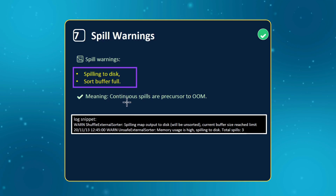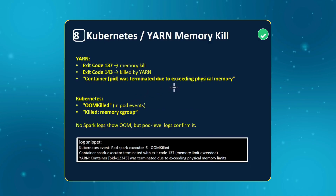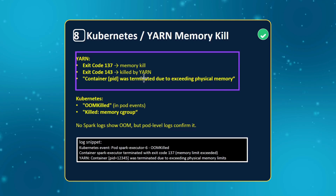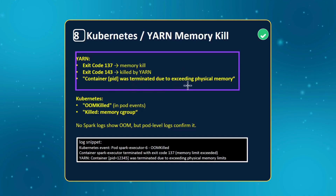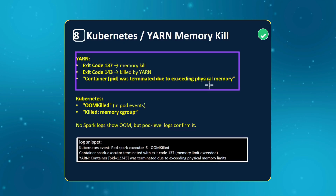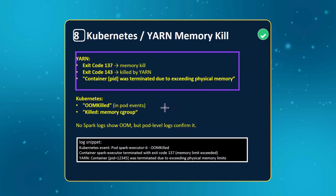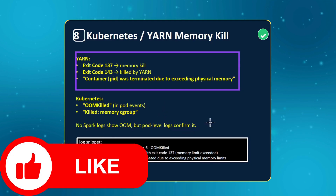The final thing is Kubernetes or YARN resource memory errors. If you see exit code 137 or 143 — these are very common codes — or 'container was terminated due to exceeding physical memory limits' (for example, current capacity is 20 GB but your executor is requesting more than that), those indicate physical memory exhaustion. In Kubernetes, you might see 'OOM killed' or 'killed in cgroup.' I hope you learned some new concepts in this video.